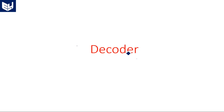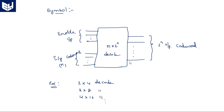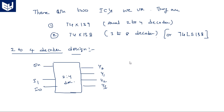Hi everyone. In this video I am going to explain how to write a VHDL code for the 2-to-4 decoder in dataflow and behavioral models. In the last video I discussed the decoder, its size as 2n by 2-power-n, and different ICs such as 74LS139 and 74LS138.